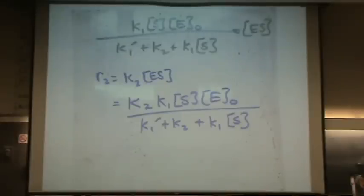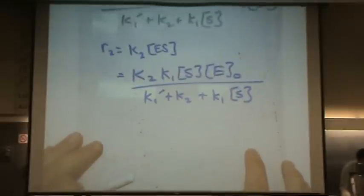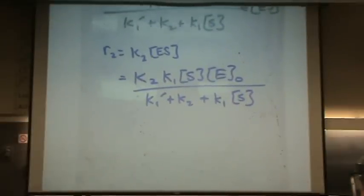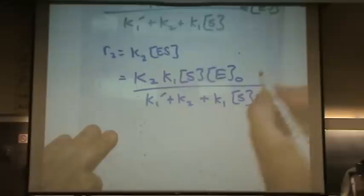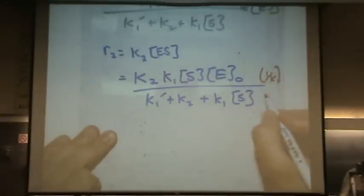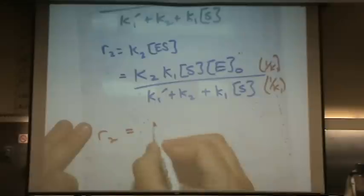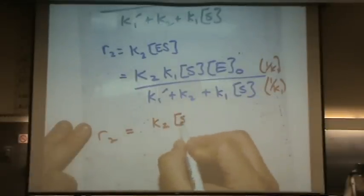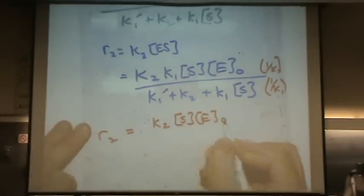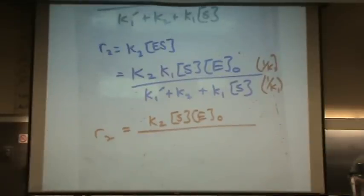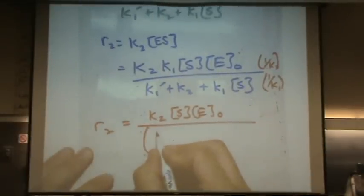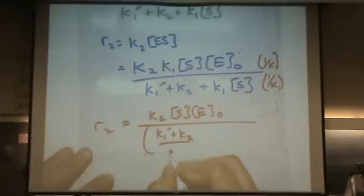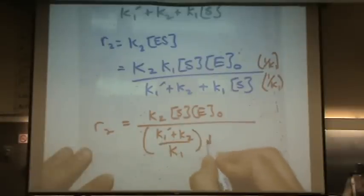Now biologists like to take one more step. You wouldn't have to do this on an exam, but I'll show you what is commonly done. They multiply top and bottom by 1 over K1 — just to simplify. If you're a biologist, I guess this might resonate. So that gives rate 2 now. You'll get rid of the K1 on top: S·E₀. On the bottom, you'll have K1 prime plus K2 over K1, plus S.